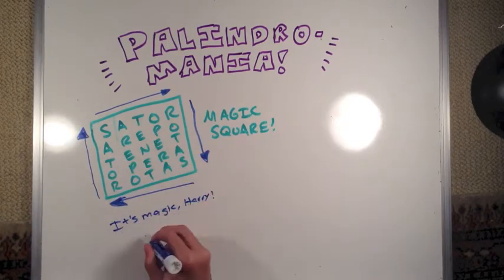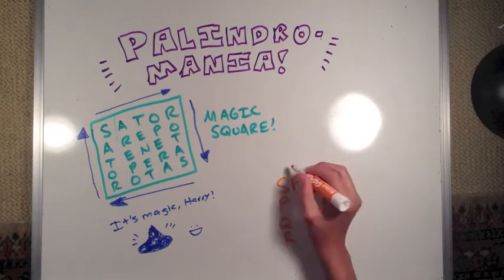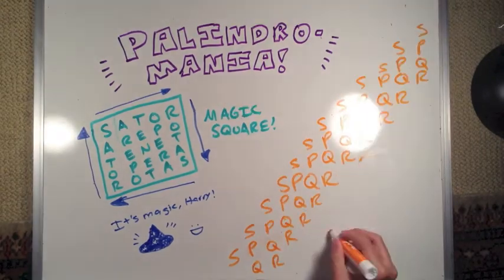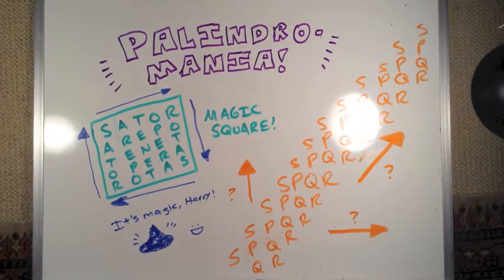And then there's this SPQR thing, except it goes vertically and horizontally and diagonally. Anyway, these things are enough to help entertain Marcus for a little while.